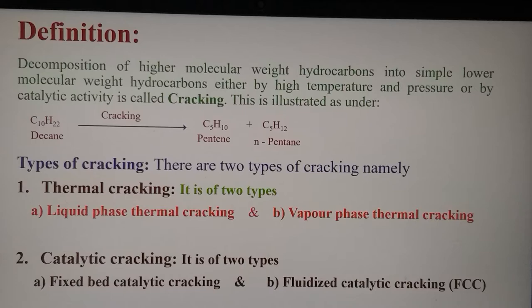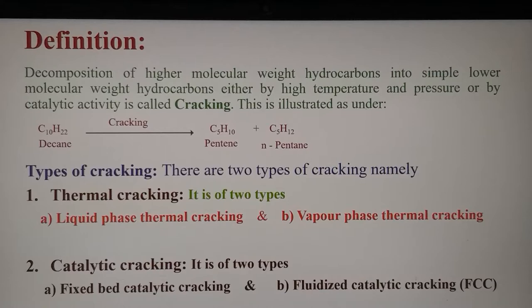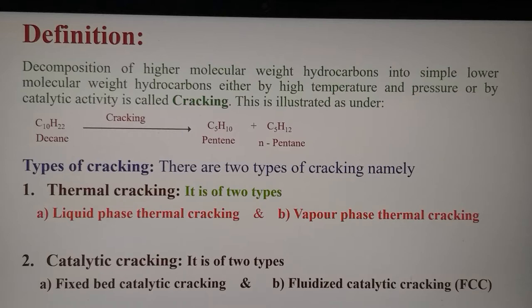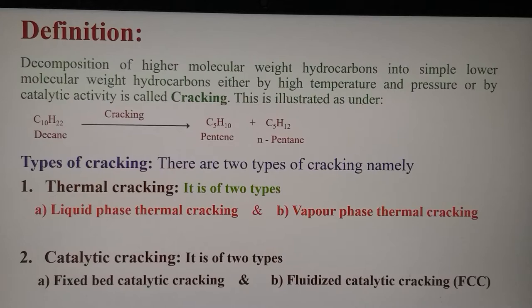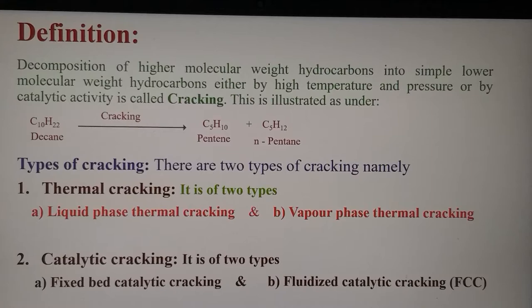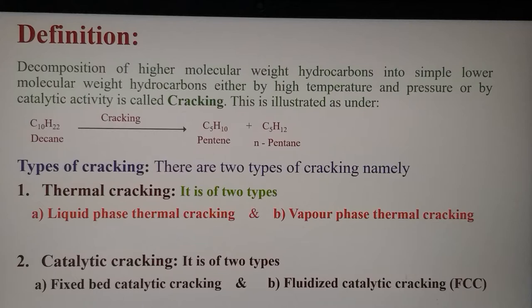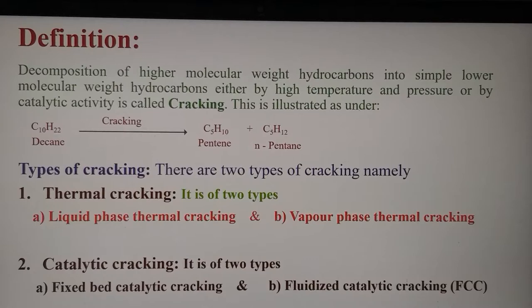From the definition we can understand that cracking is of two types: thermal cracking, which is brought about at high temperature and pressure, and catalytic cracking. Thermal cracking can again be divided into two types: liquid phase thermal cracking and vapor phase thermal cracking. Catalytic cracking is of two types: fixed bed catalytic cracking and fluidized catalytic cracking (FCC), or moving bed catalytic cracking. We call it fixed bed, moving bed, or fluidized bed because the exhausted catalyst is taken into a regeneration tower, meaning the catalyst is moved from the reaction tower to the regeneration tower. In fixed bed catalytic cracking, the catalyst is not moved from one tower to another.